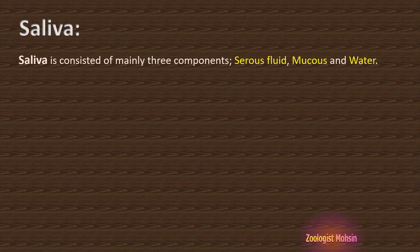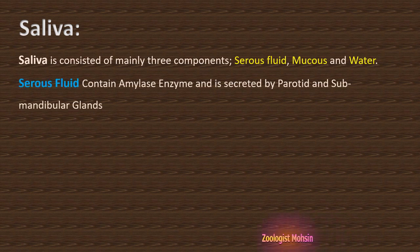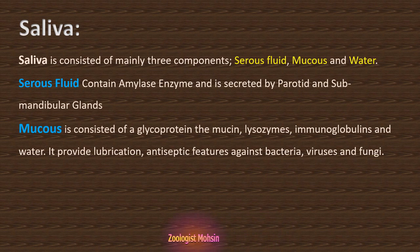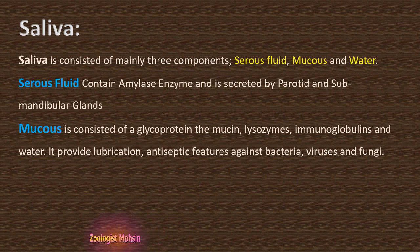What is saliva? Saliva consists mainly of 3 components: serous fluid, mucus, and water. Serous fluid contains the amylase enzyme and is secreted by the parotid and submandibular glands. Mucus is composed of glycoprotein — specifically mucin — as well as lysozymes, immunoglobulins, and water. All these chemicals collectively make up mucus.